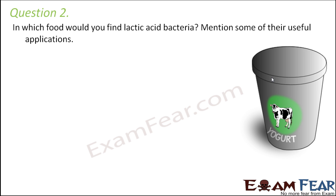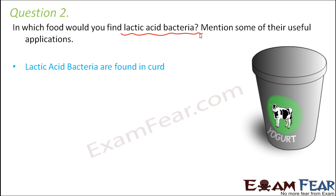Question number 2: In which food would you find lactic acid bacteria? Mention some of their useful applications. Lactic acid bacteria are found in curd; the type most commonly found is Lactobacillus. One useful application is curdling of milk — if you add a small teaspoon of curd to milk and leave it undisturbed, the Lactobacillus undergoes fermentation, producing lactic acid, which causes coagulation of proteins and converts milk into curd.